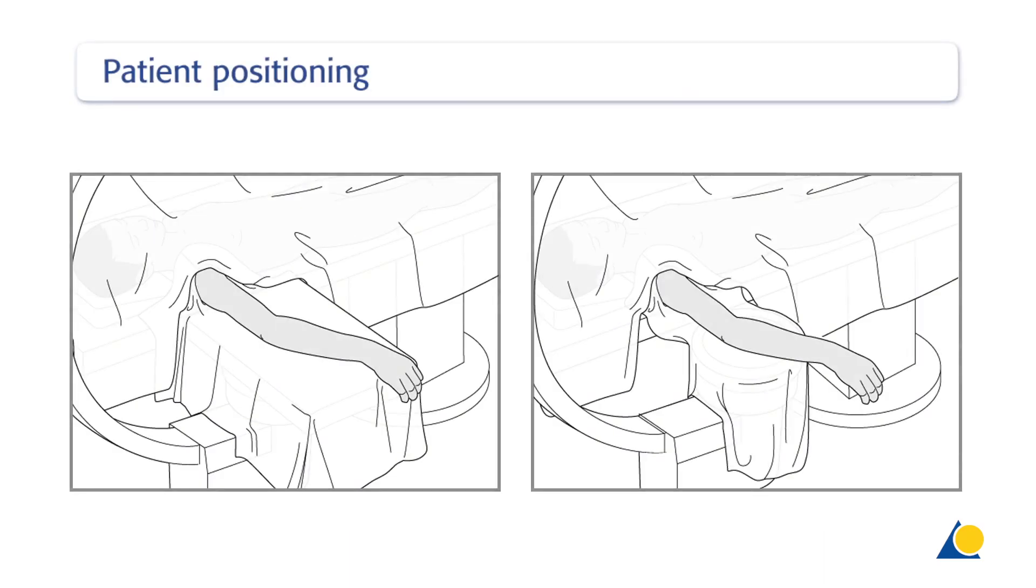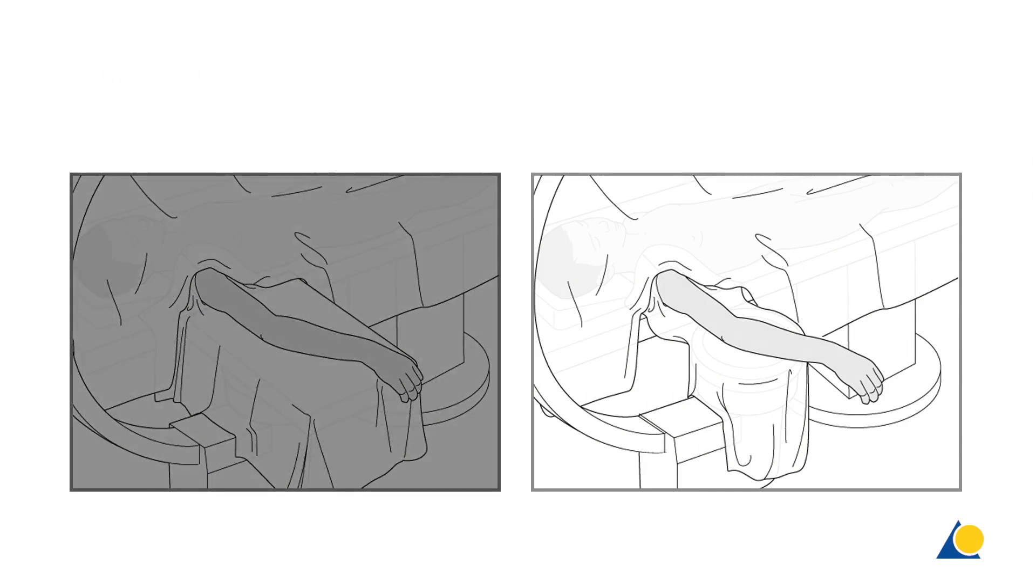The patient is positioned supine on the operating table, with the arm either on an arm-side table or directly on the draped C-arm. Positioning the arm directly under the C-arm guarantees larger and better image intensification quality of the fracture site and reduces exposure time to radiation. However, care should be taken to avoid damaging the image intensifier with instruments.